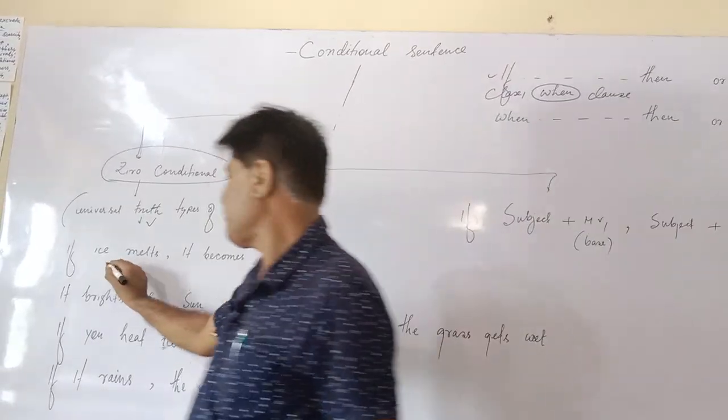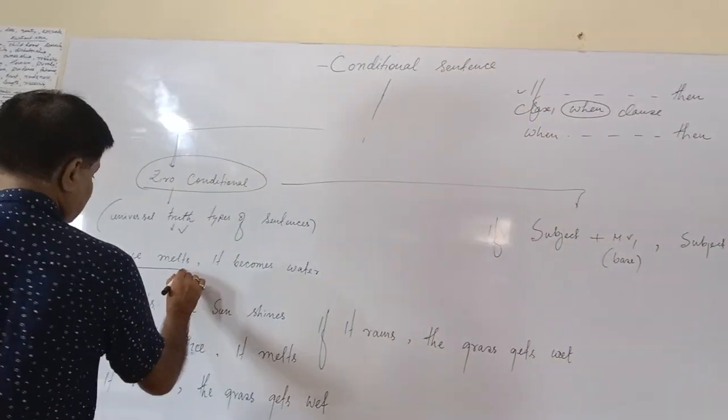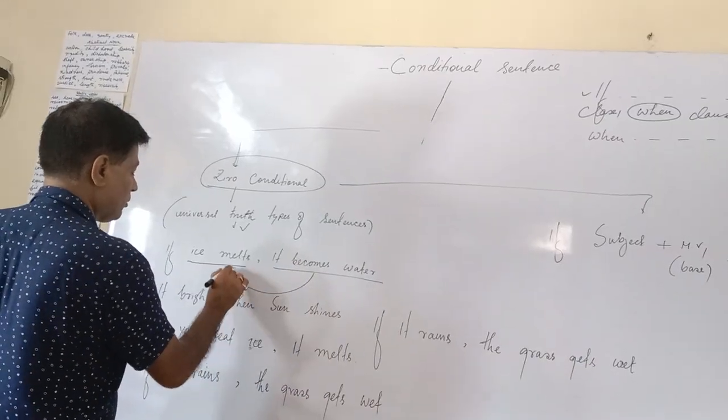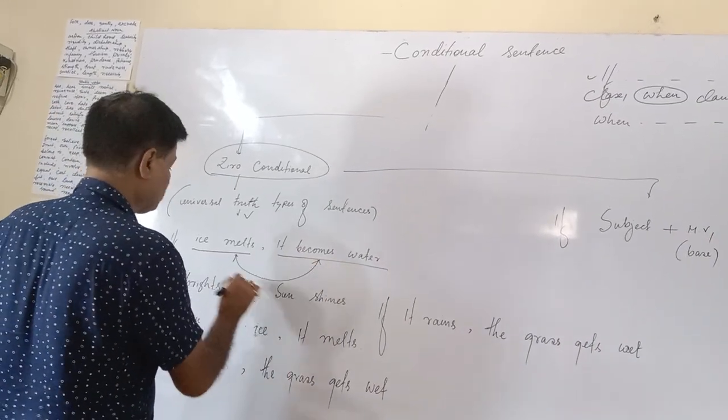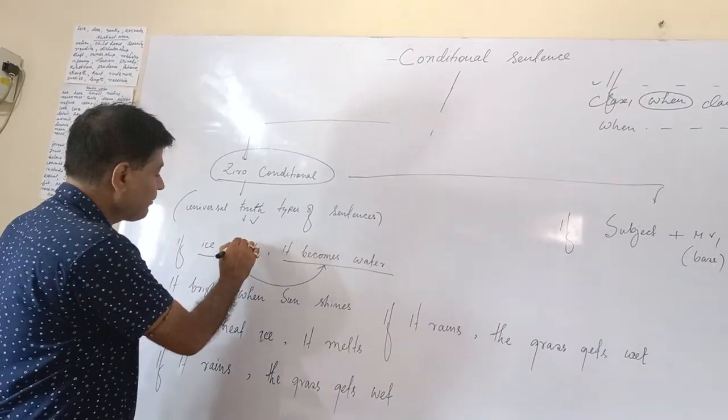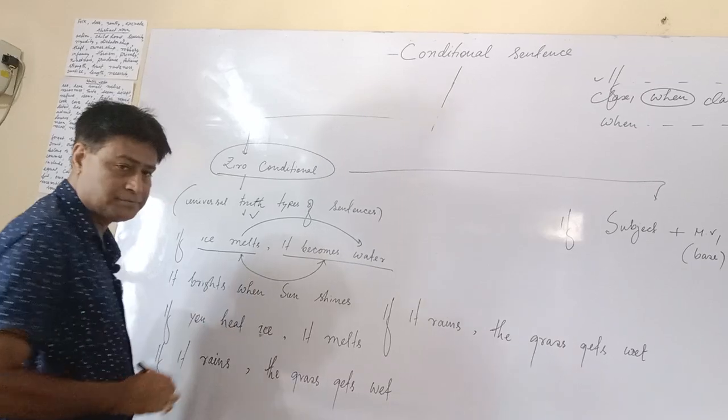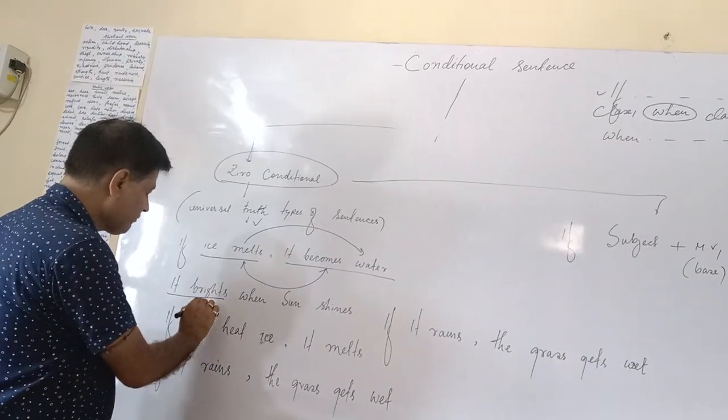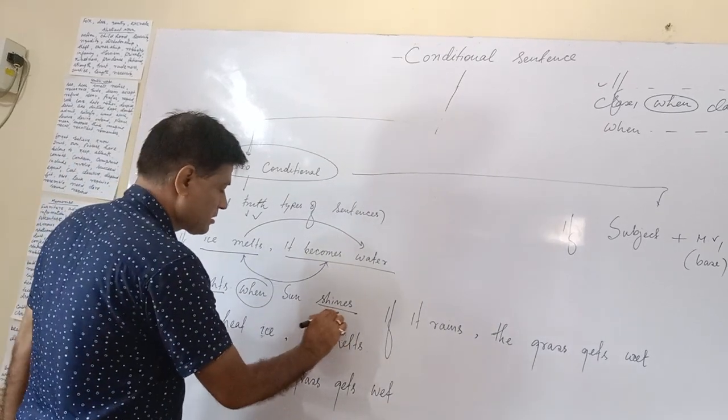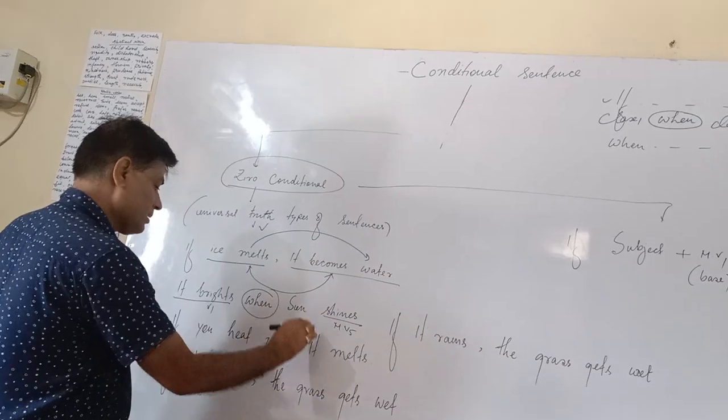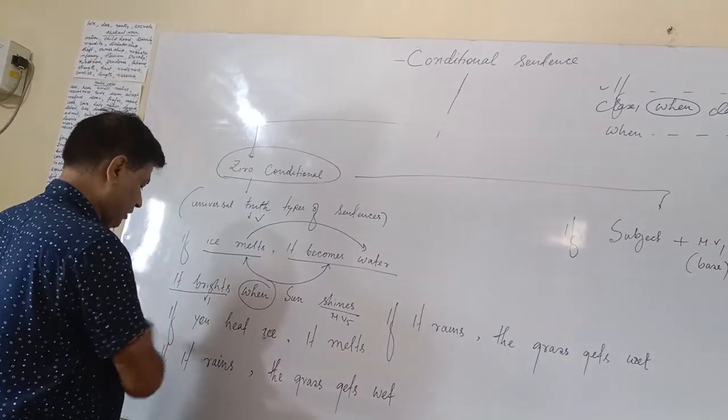If ice melts, it becomes water. That means it will be always present form. If ice melts, then ultimately turns into water. In second sentence, when sun shines, that is also main verb, as present tense and main verb one.